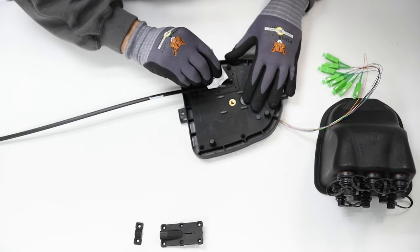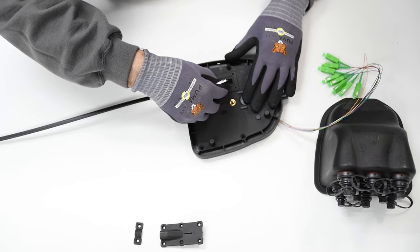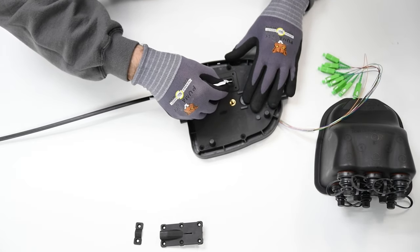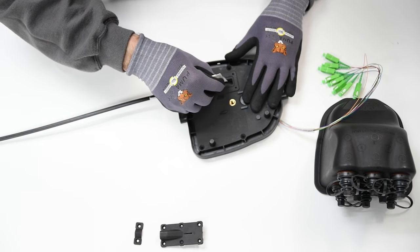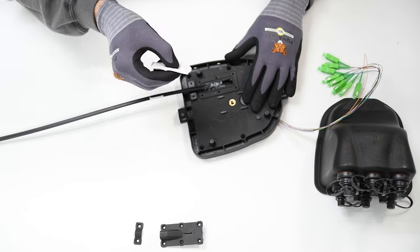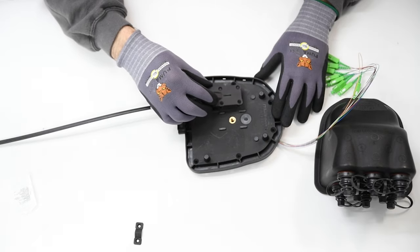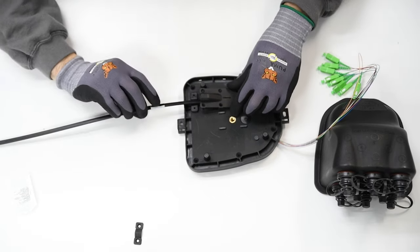Also apply enough sealant for a thin layer on the separate grommet. We also recommend applying a thin layer to the fiber jacketing itself to establish a complete seal. After applying sealant to the grommet, place over the port entry in the orientation shown.